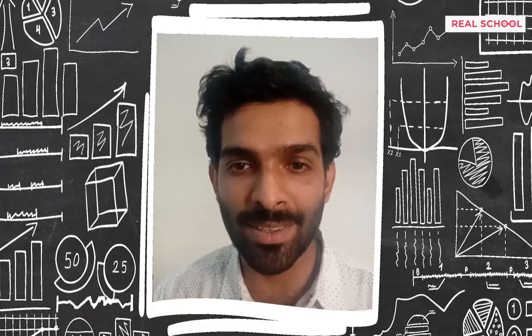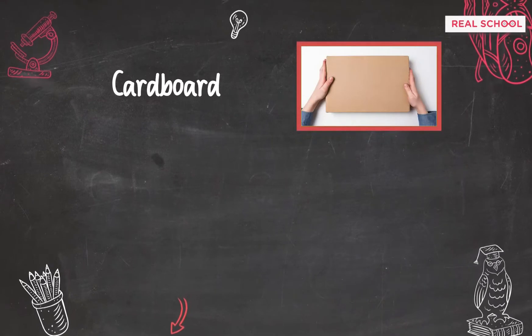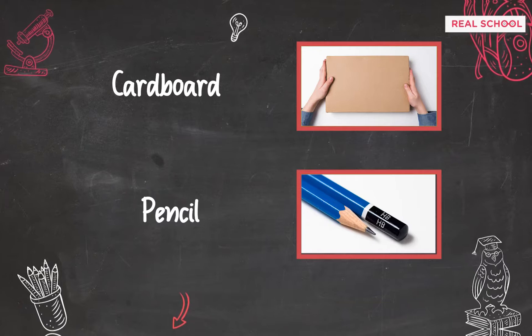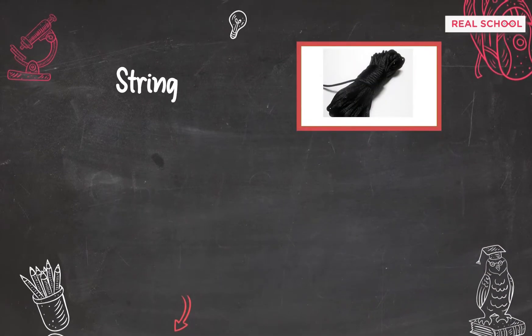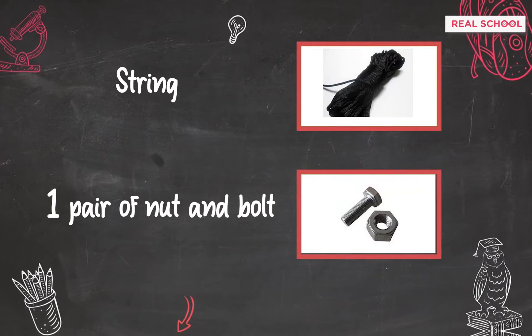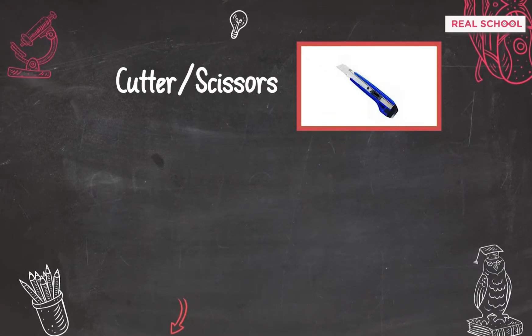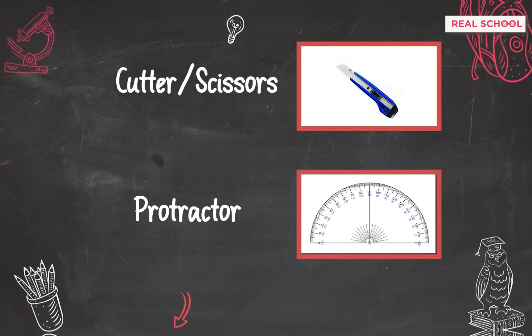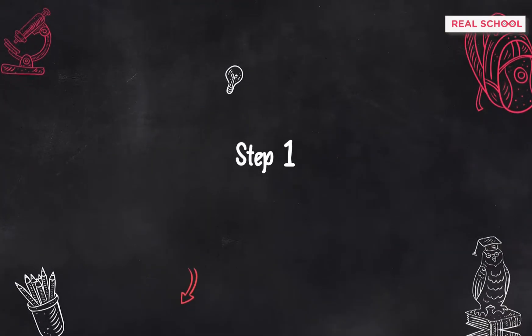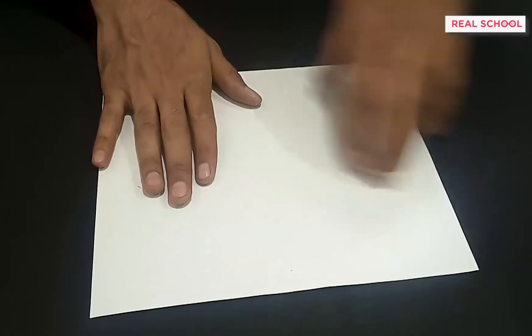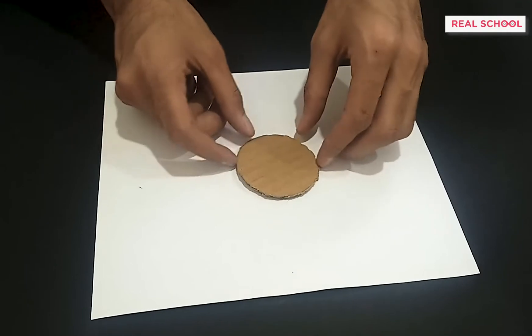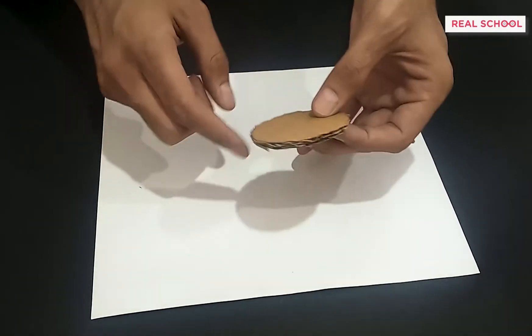Let's get started — you will be requiring the following materials. The principle behind a trundle wheel is elementary, but first we'll need to know a few basic ideas about a circle, like its circumference. Circumference is nothing but the length of the boundary of the wheel.